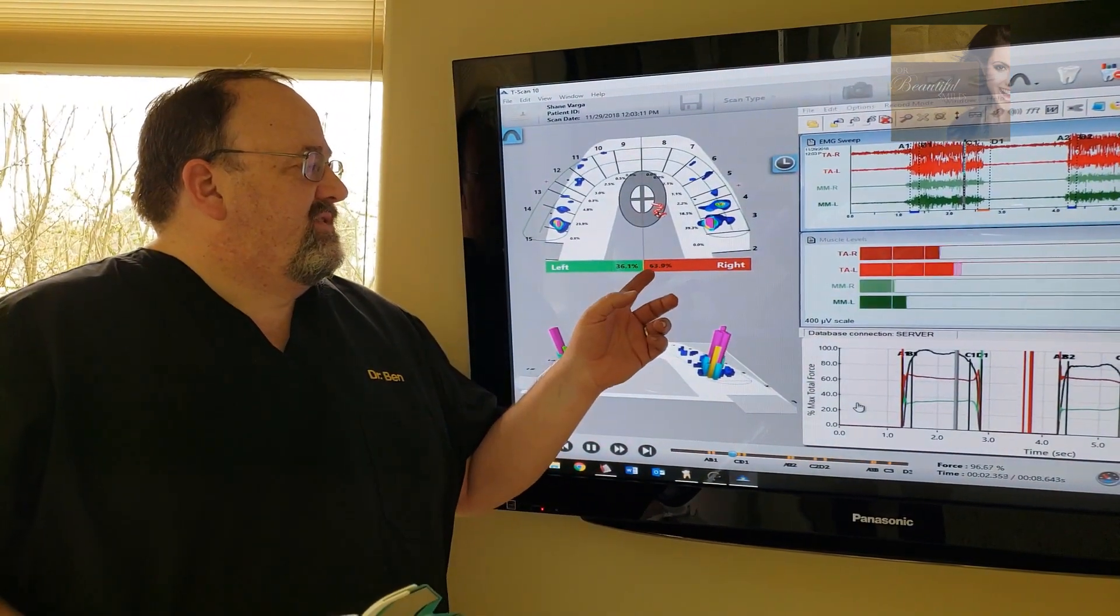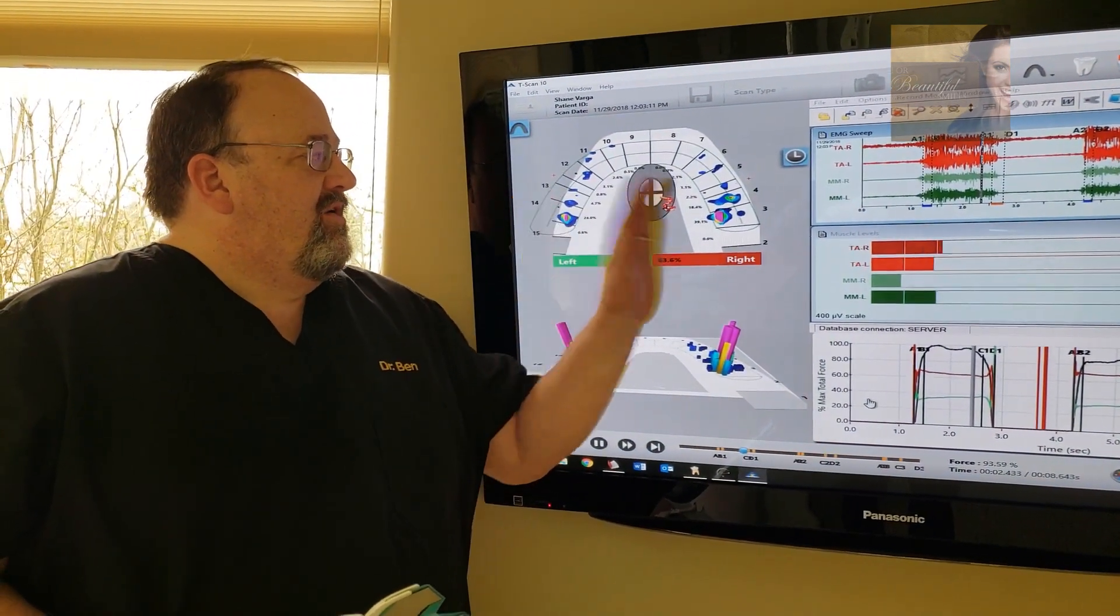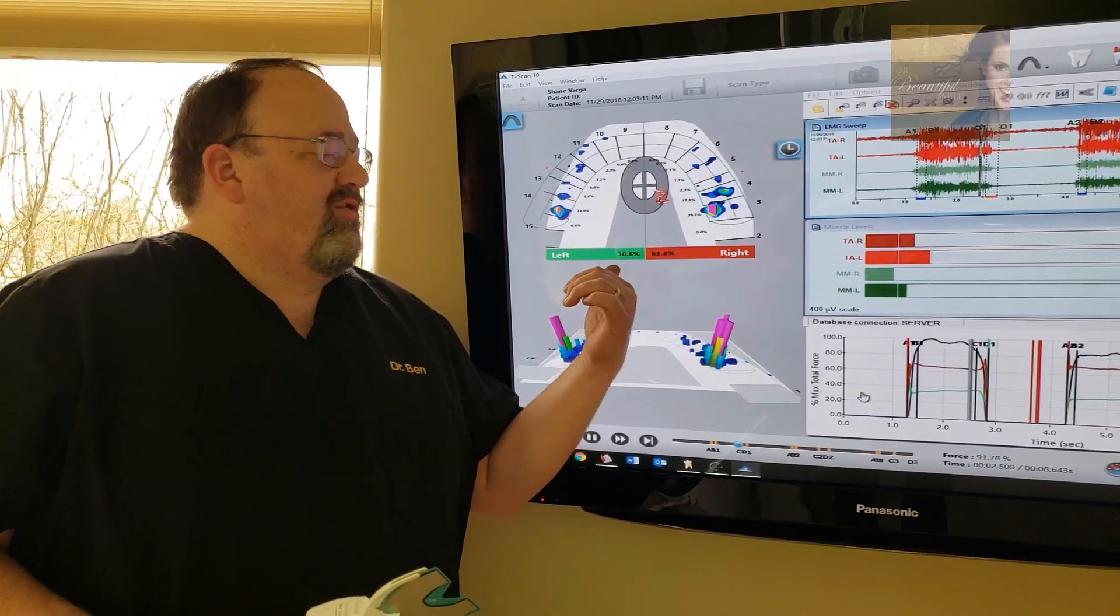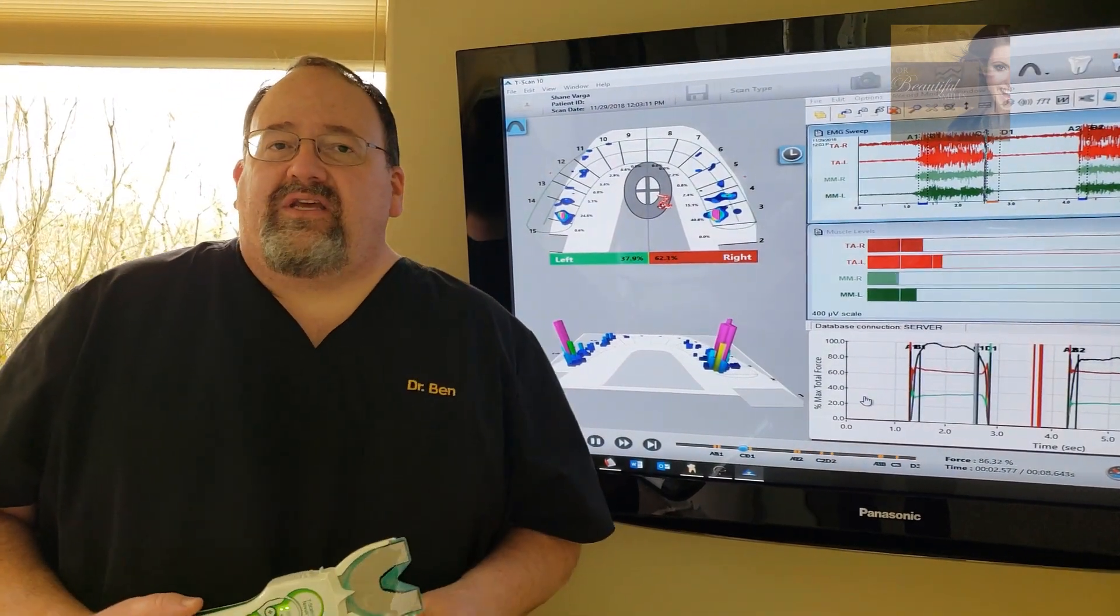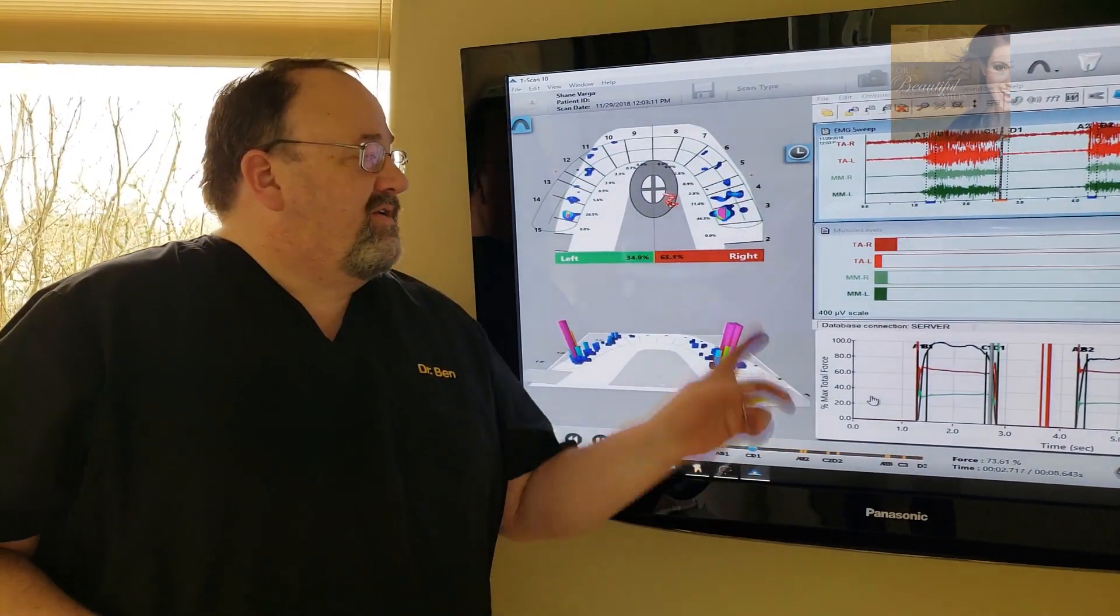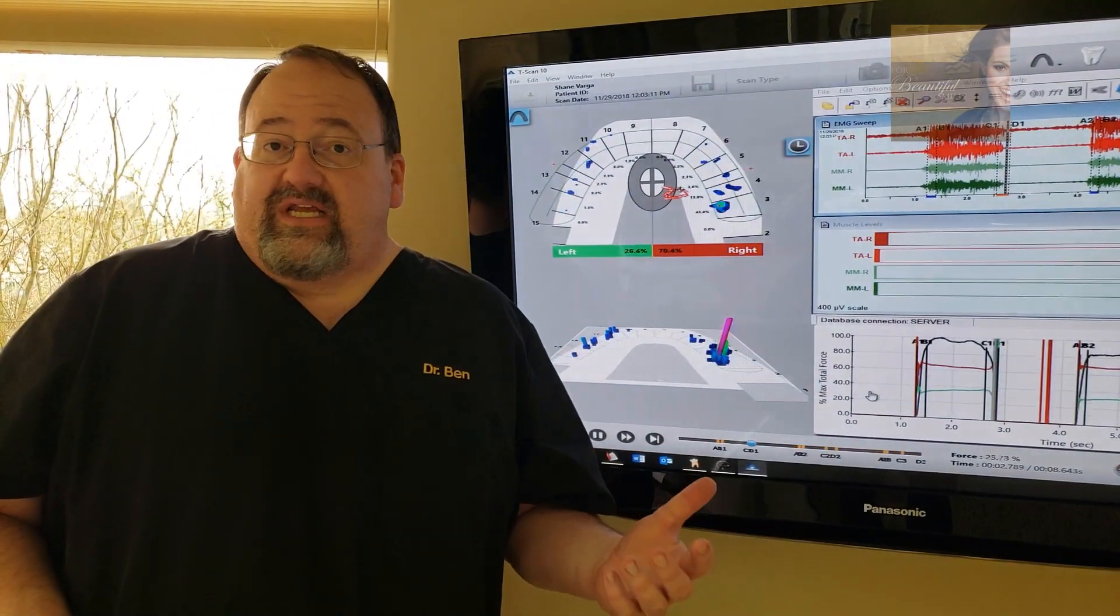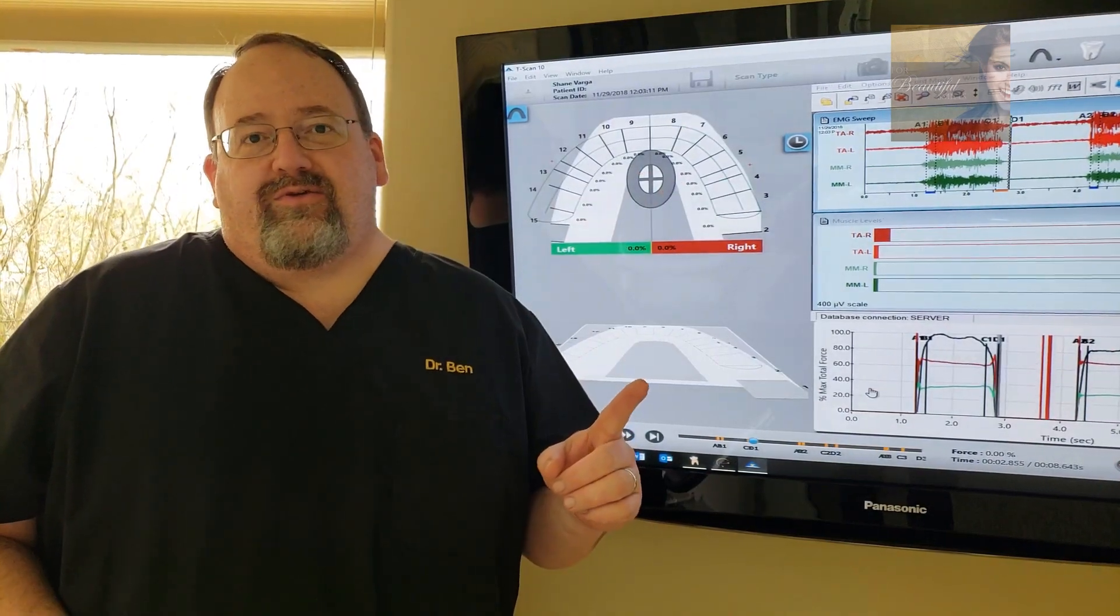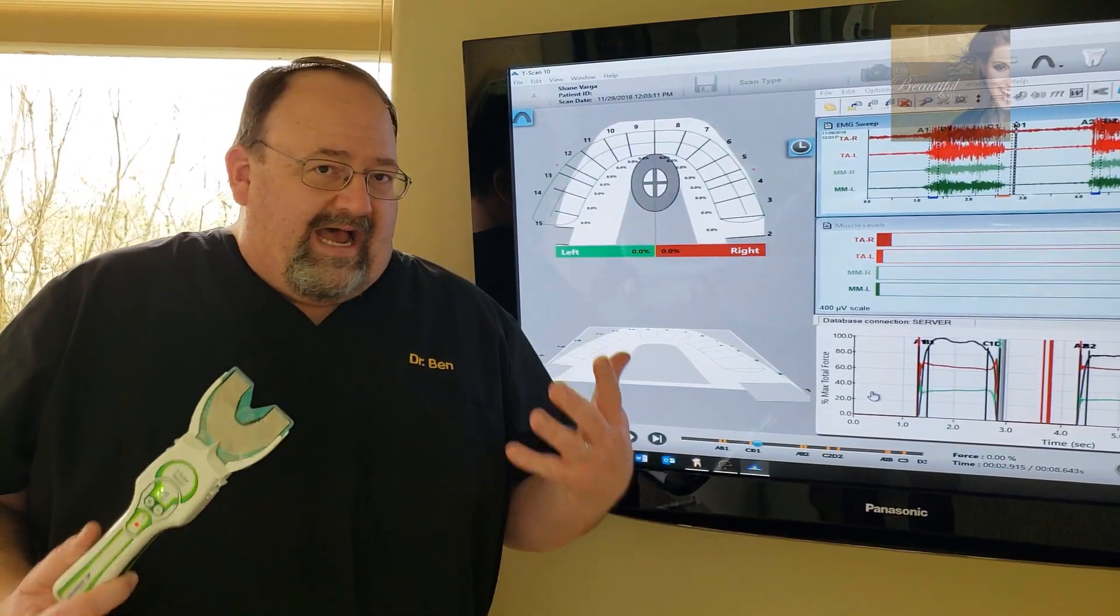For example, this person's got 64% of their bite on the right side and 36% of the bite on the left. Wouldn't that be good to know before you start cutting crowns over here on a tooth that's got 47% of their bite on that one tooth? So how do I use this?